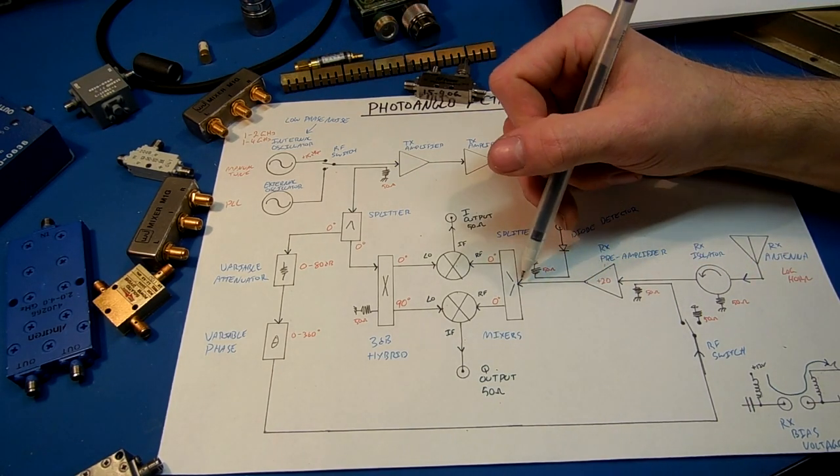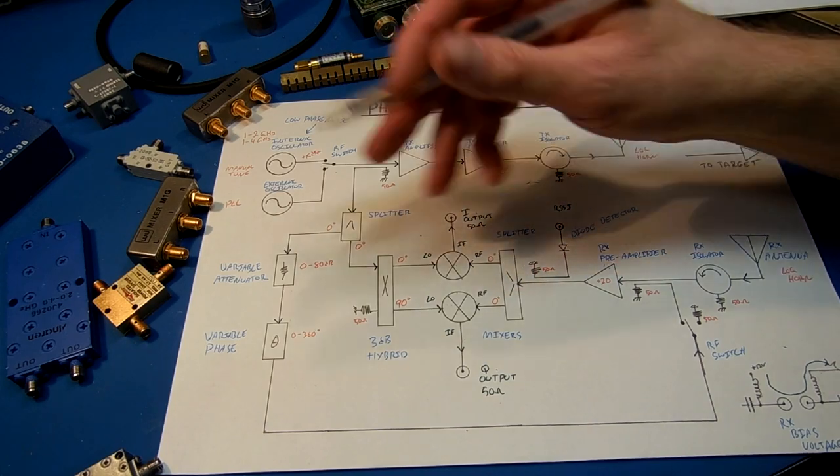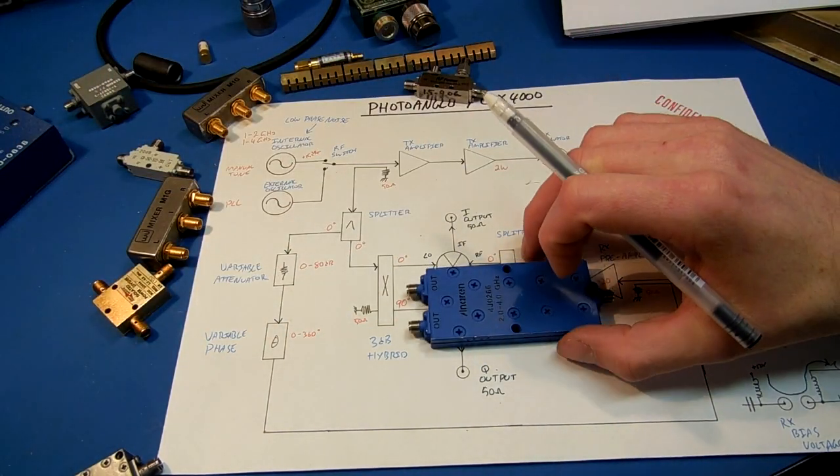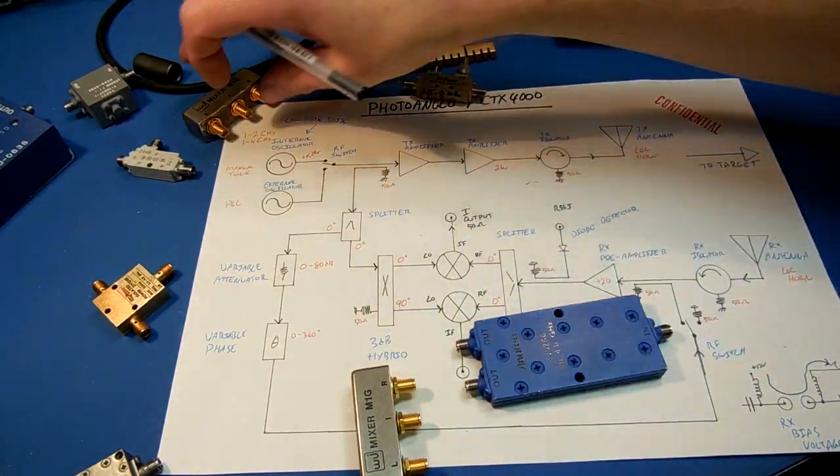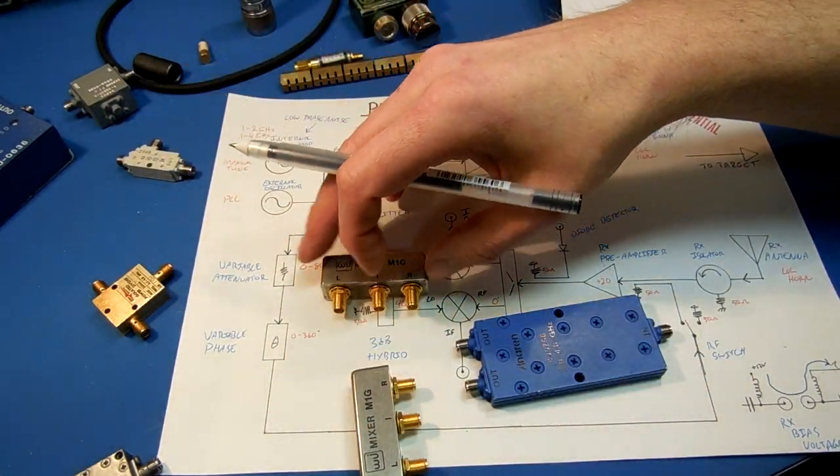The preamplifier then feeds another zero degree splitter. Another similar splitter like that. And that goes into the RF ports of our mixers.